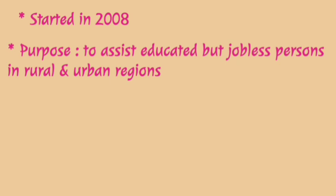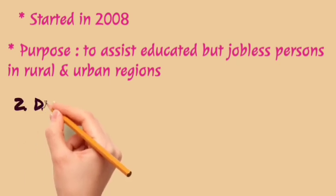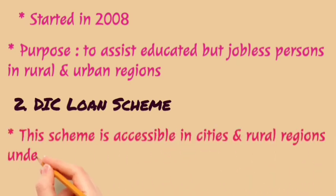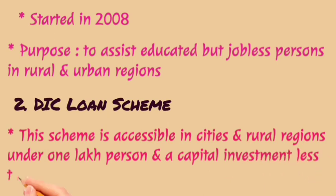The second scheme is called the DIC Loan Scheme. This scheme applies to cities and rural areas where the population is near one lakh people and capital investment expenditure is less than two lakhs. It helps self-employed and smaller businesses in rural areas, small-sized and board industries, to obtain MSME loans, that is Micro, Small and Medium Enterprise loans.